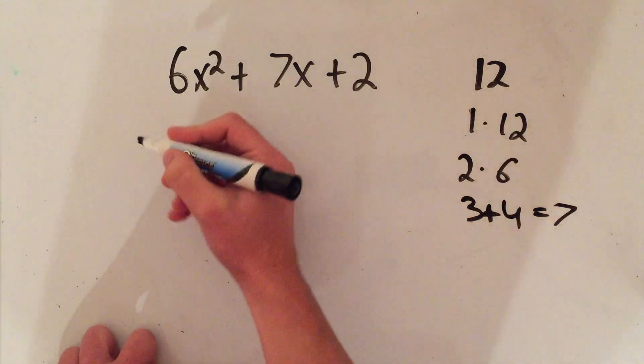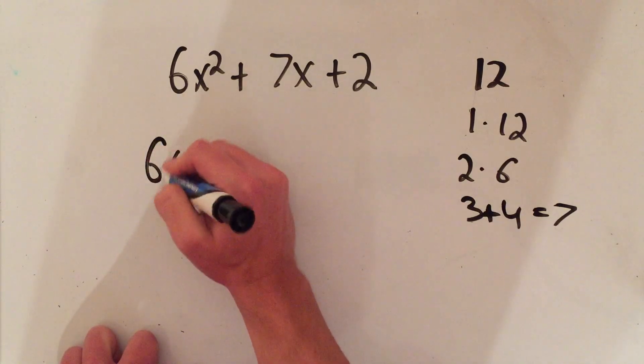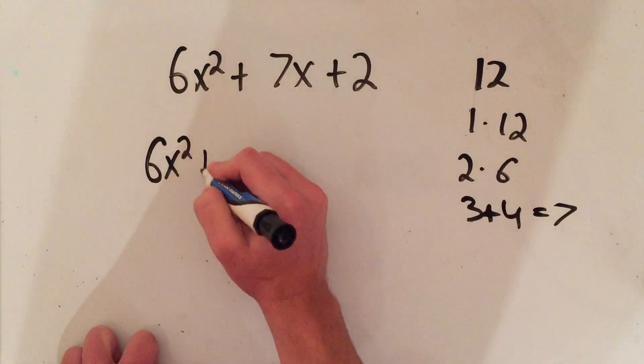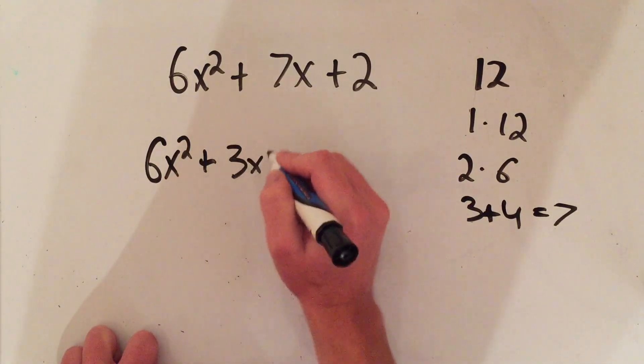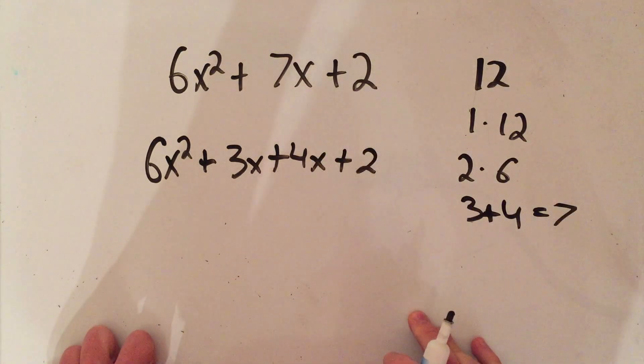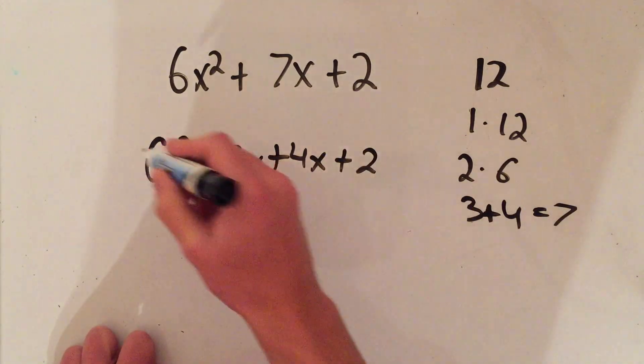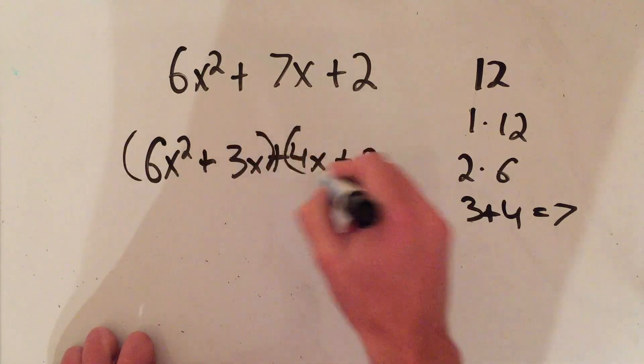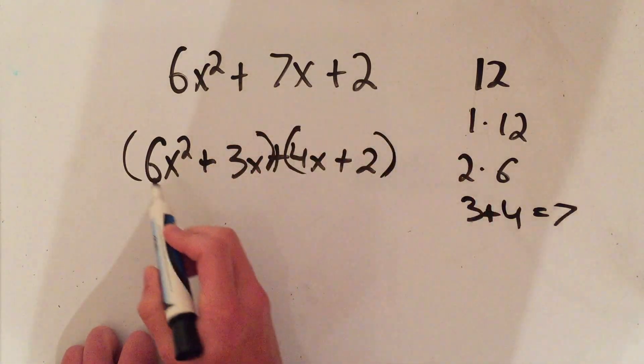And then I would have rewritten 7x as 3x plus 4x. Whenever I'm factoring with four terms, we do factor by grouping, so I would group these. This first term has a greatest common factor of 3x.